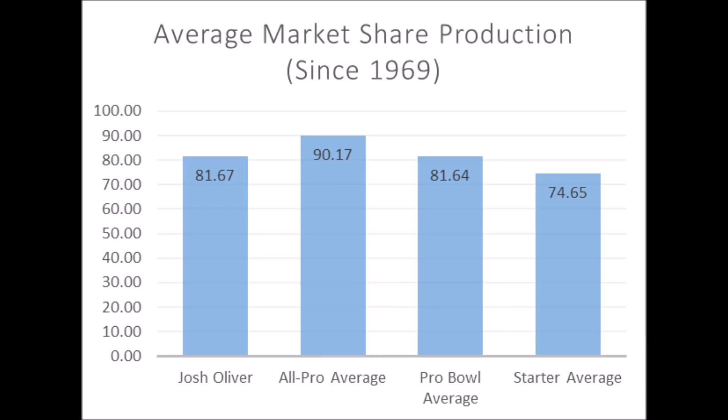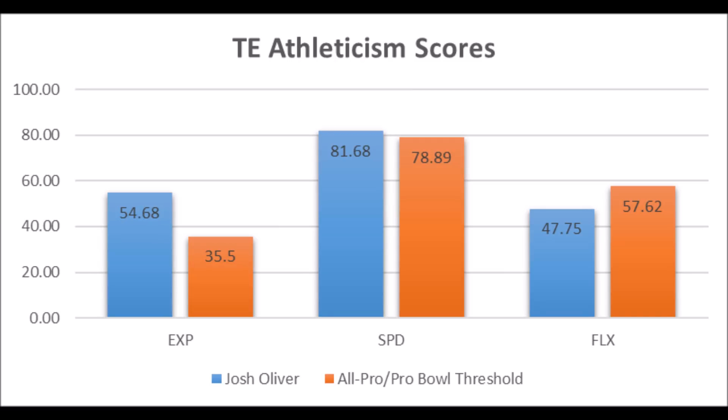Oliver has a great production profile, but athleticism is where he somewhat falls short. He had a 54.68 explosive lower body training score, an 81.68 speed score, and a 47.75 flexibility score. The only area that he has issues with is his flexibility testing — everything else is great. The explosion is there, the speed is there, but that flexibility testing doesn't hit all the athletic thresholds needed at the tight end position.